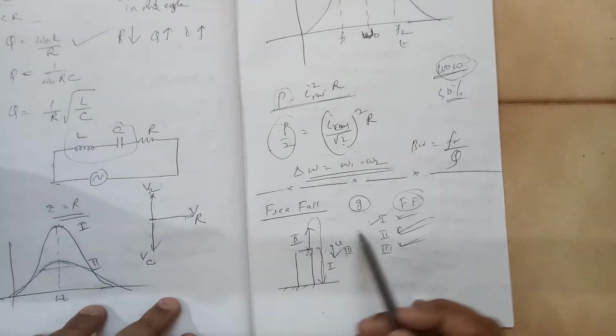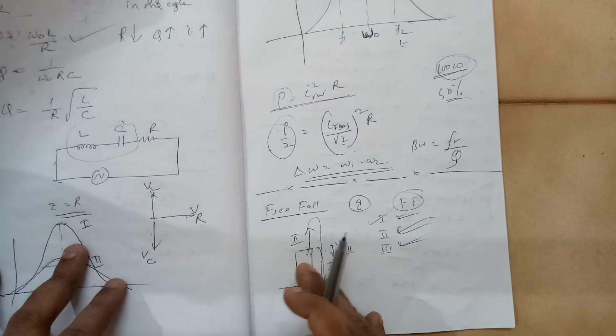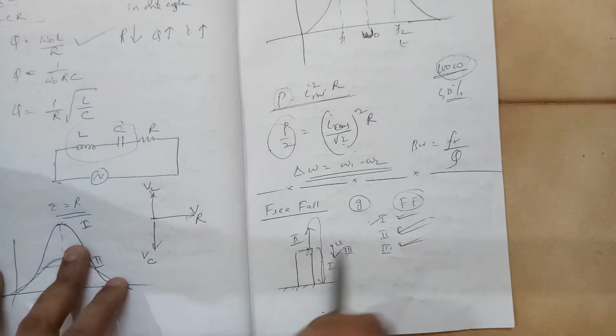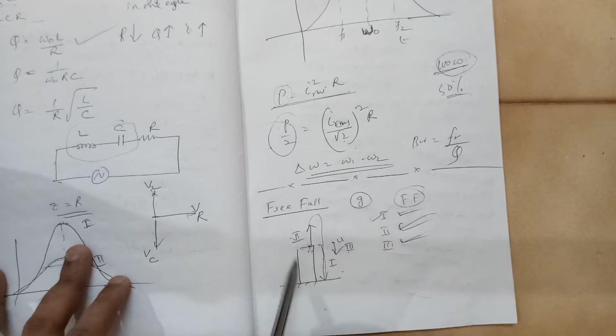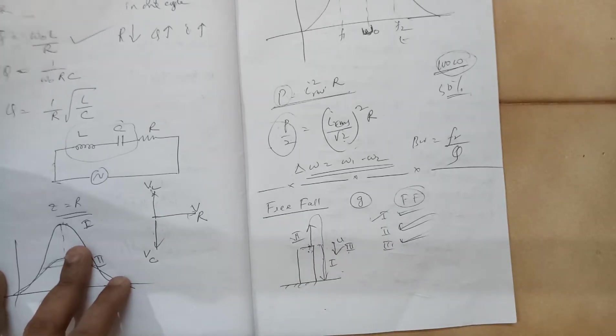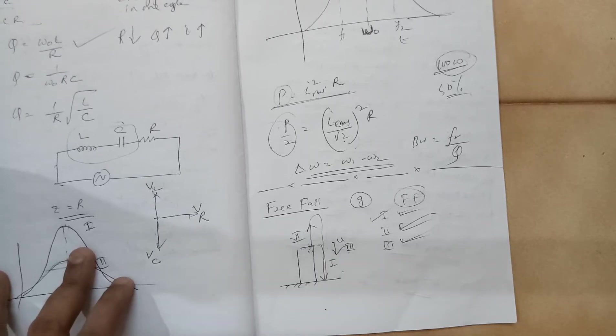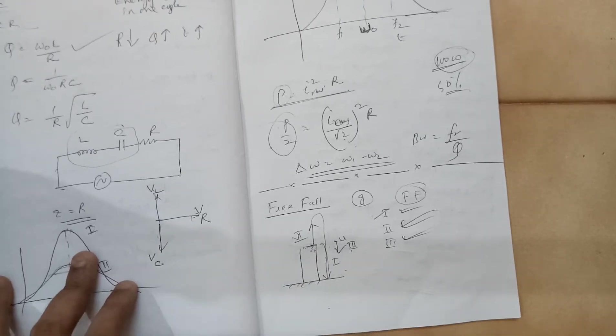The first case, obviously you will say that it is the case of free fall. But take case 2 and 3. When you throw the body in the upward direction, the moment you release it, the object is under the direct influence of force due to gravity.